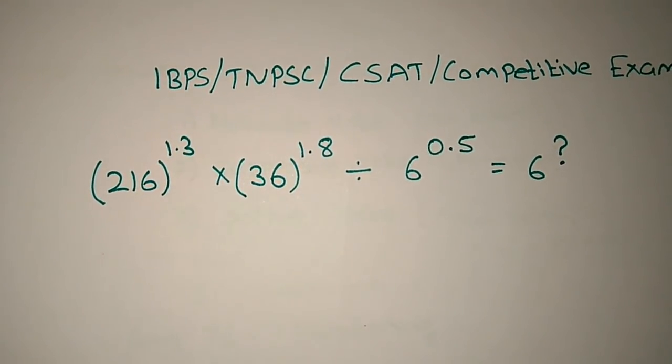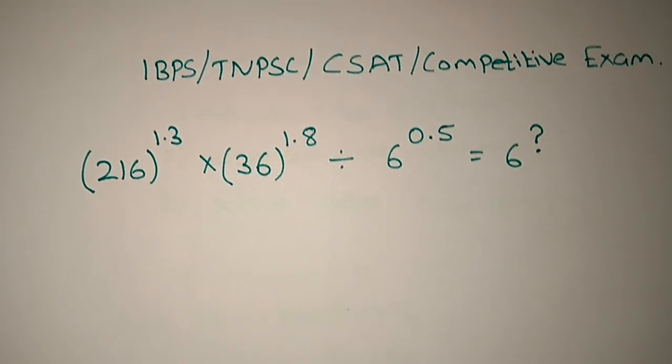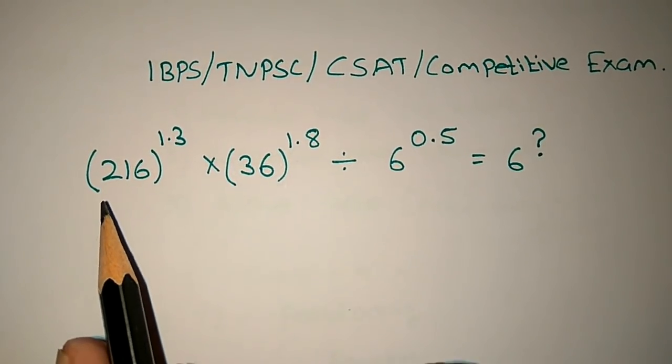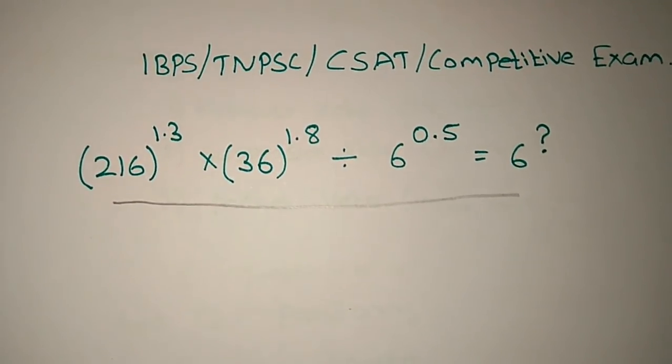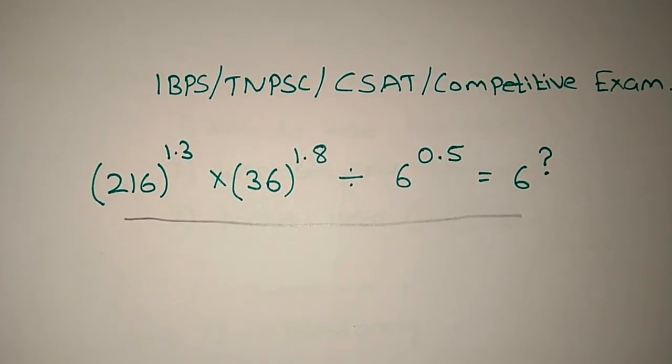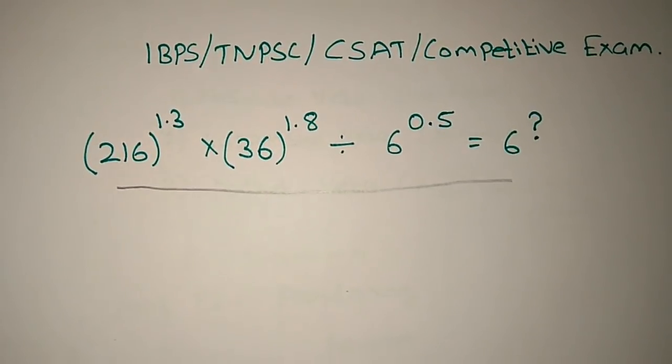Good morning friends. We will solve a competitive exam problem for IBPS, TNPSC, CSAT. The problem is: 216 to the power 1.3 multiplied by 36 to the power 1.8 divided by 6 to the power 0.5 equals 6 to the power of what?